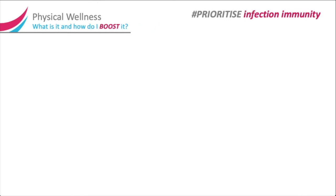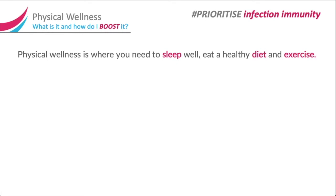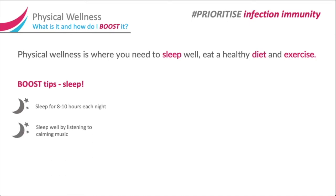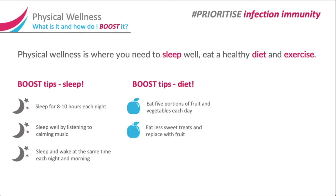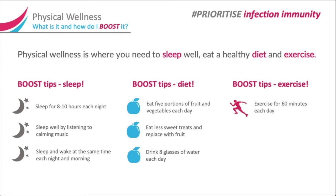Physical wellness — what is it and how do I boost it? Physical wellness is where you need to sleep well, eat a healthy diet, and exercise. Boost tips for sleep: sleep for 8 to 10 hours each night; sleep well by listening to calming music; sleep and wake at the same time each night and morning. Boost tips for diet: eat 5 portions of fruit and vegetables each day; eat less sweet treats and replace with fruit; drink 8 glasses of water each day. Boost tips for exercise: exercise for 60 minutes each day; exercise for fitness and skills; exercise in mornings and afternoons for energy.